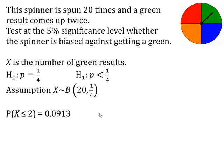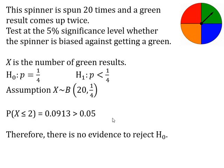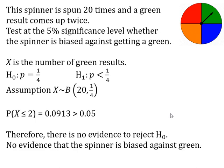We compare that to our significance level — it's greater than 0.05, and that tells us there is no evidence to reject H₀. We need the p-value to be less than our significance level if we want evidence to reject H₀. In context, this tells us there is no evidence that the spinner is biased against green.